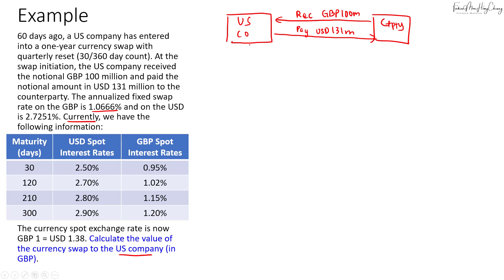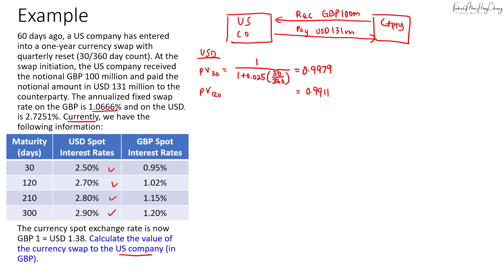We'll calculate the PV of the US dollar payments and the PV of the pound payments. Starting with the USD side, we calculate the PV discount factors. For the 30-day rate: 1 divided by (1 + 0.025 × 30/360) = 0.9979. For 120 days: 0.9911. For 210 days: 0.9839. For 300 days: 0.9764. Summing all these gives a total PV factor of 3.9493.